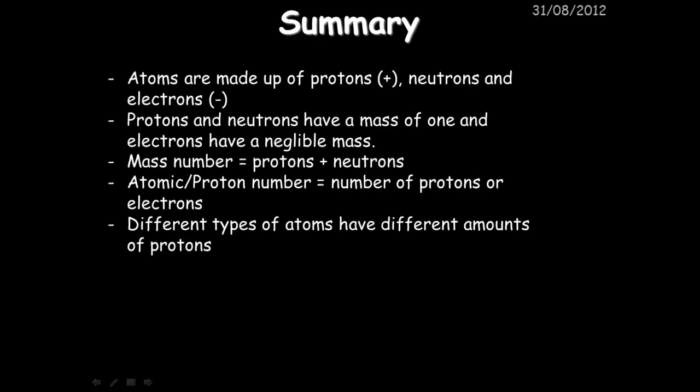Okay, so atoms are made up of protons, neutrons and electrons. The protons have a positive charge, neutrons have a neutral charge and electrons have a negative charge. The protons and neutrons have a mass of one and the electrons, because they have a negligible mass, we refer to them as having no mass. Your mass number, how heavy an atom is, is the number of protons plus the number of neutrons. The atomic or proton number is the number of protons and it also indicates the number of electrons. There are different types of atoms that you can find on the periodic table. There are roughly 120 on the periodic table at the minute and it's the number of protons that determines the type of atom that it is.